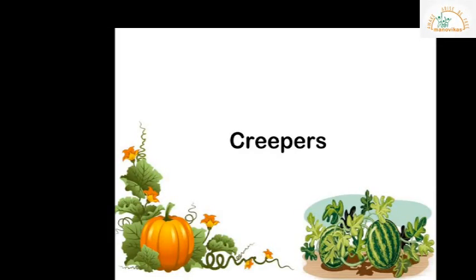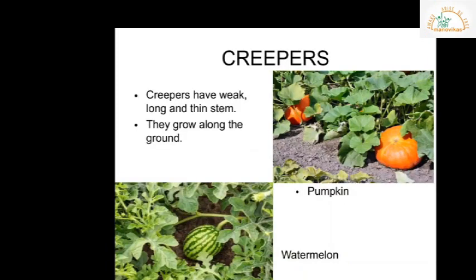Now let us learn about creepers. Creepers are plants that grow along the ground. They have weak, long, and thin stems that can neither stand straight nor support their own weight. Some examples of creepers are the pumpkin plant and the watermelon plant. Since creepers have weak stems and produce large fruits or vegetables, they spread out on the ground and grow. Creepers also have tendrils.